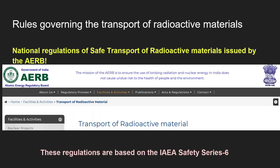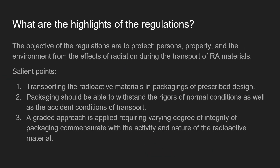There are defined rules for the transport of radioactive materials. We have the Radiation Protection Rules for Safe Transport of Radioactive Materials issued by AERB, which specify what must be done. These regulations are in turn based on IAEA Safety Series 6.